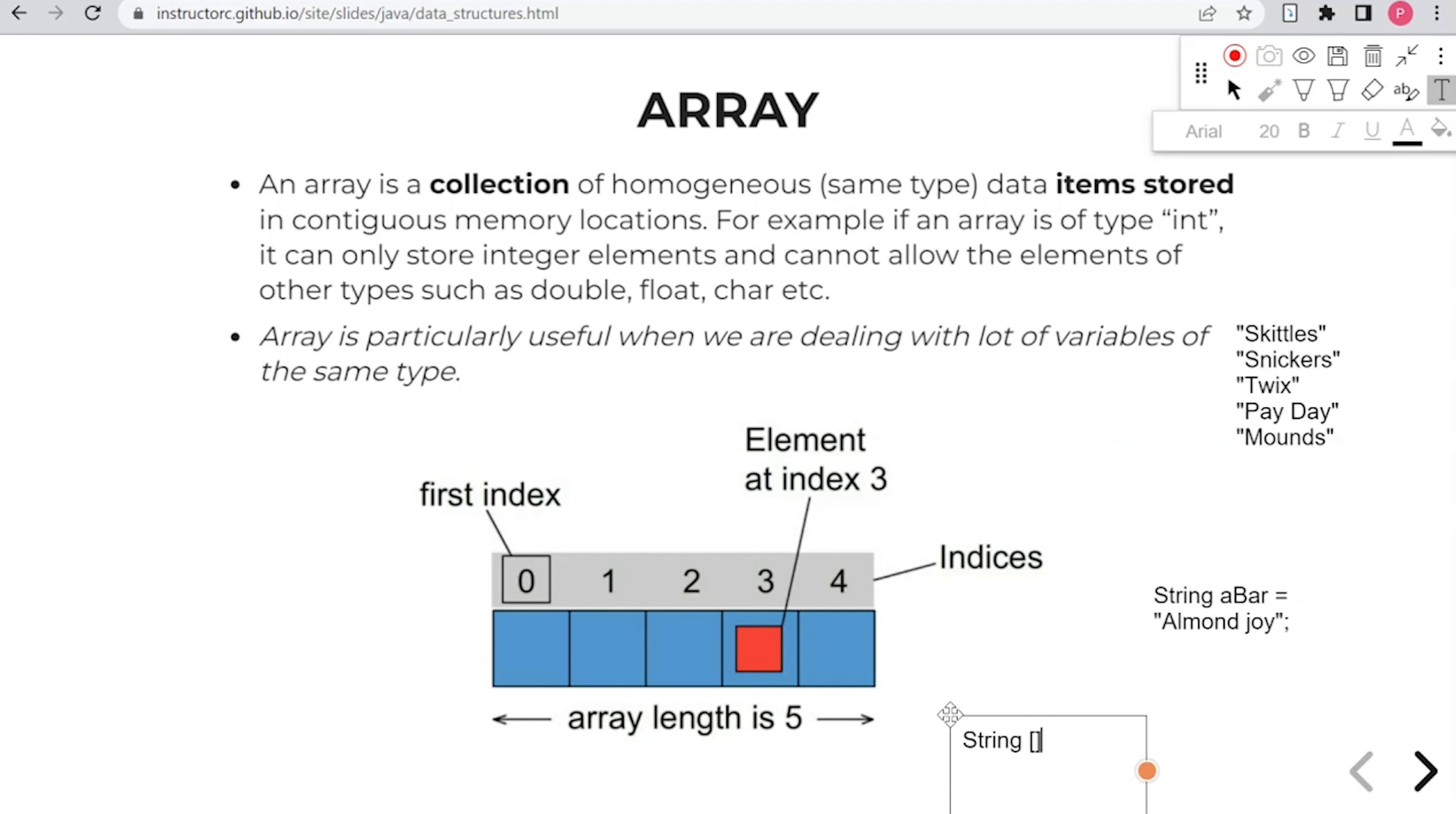And then we'll give our array a name. Let's say candy bars. Let me see if I can make this a little bit bigger by stretching this out. And I'll say candy bars. And this will be called a collection literal.